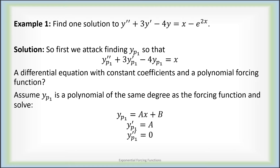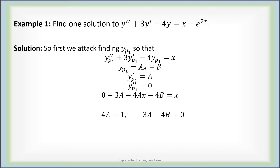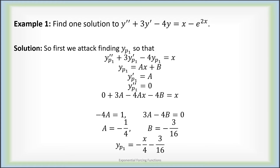We throw all that into the differential equation. Zero plus 3a minus 4ax minus 4b must equal x. Therefore, negative 4a must equal 1 and 3a minus 4b must equal zero. We quickly solve this to get a = -1/4 and b = -3/16. So we set yp1 to be negative one-quarter x minus three-sixteenths.